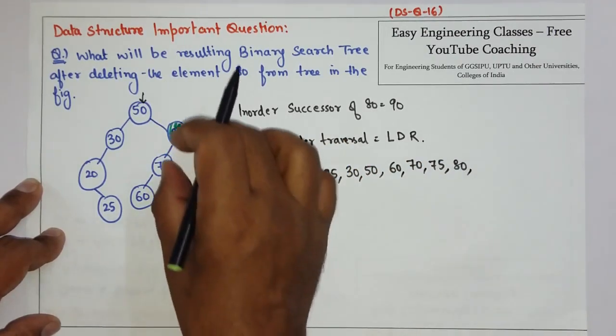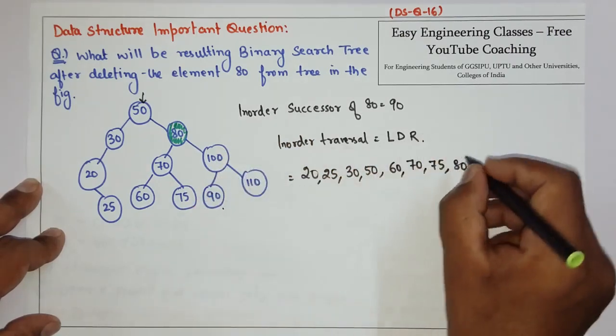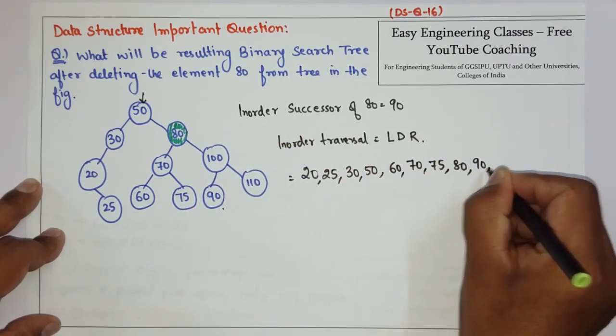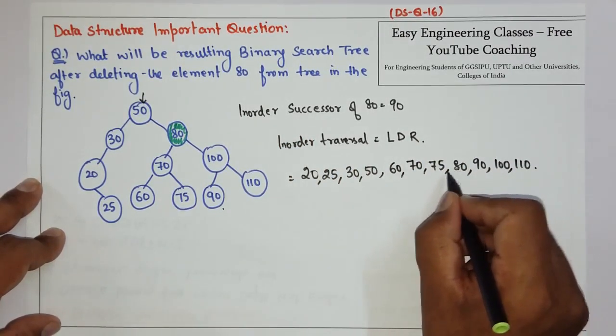Now in the right part of this right subtree we have to go to the left. So 90, 100, and 110. So now let's see.